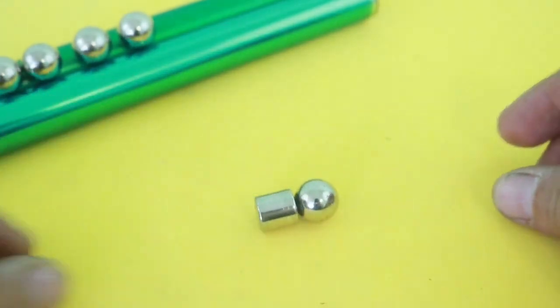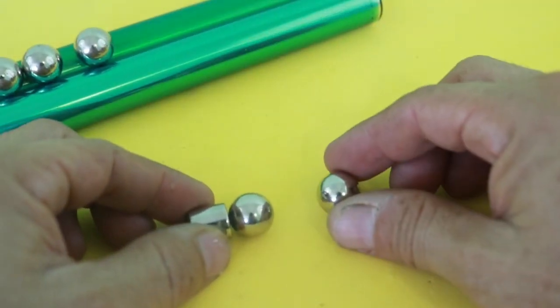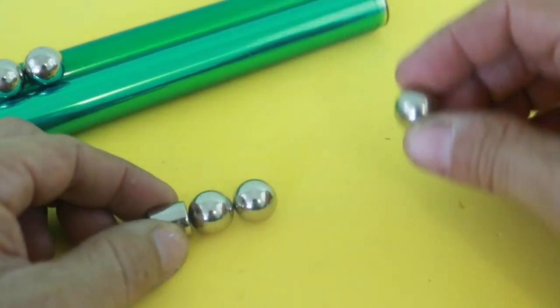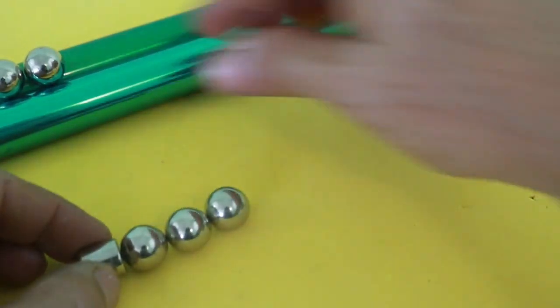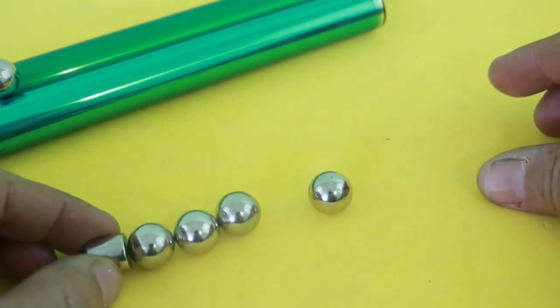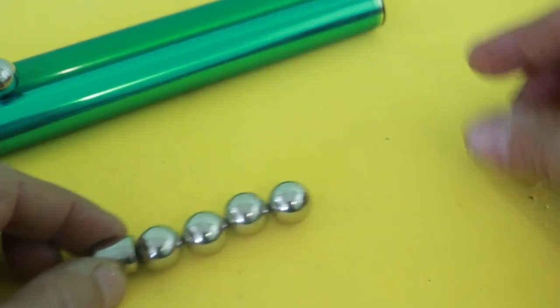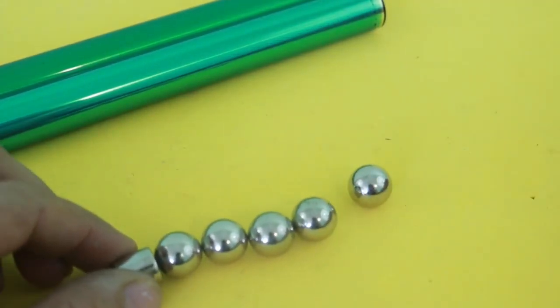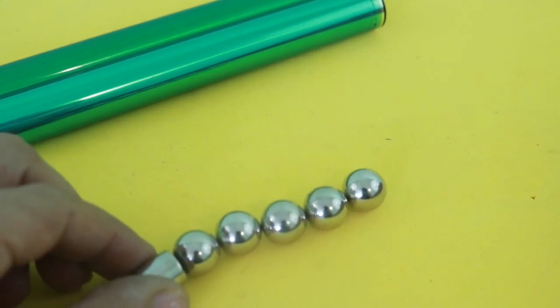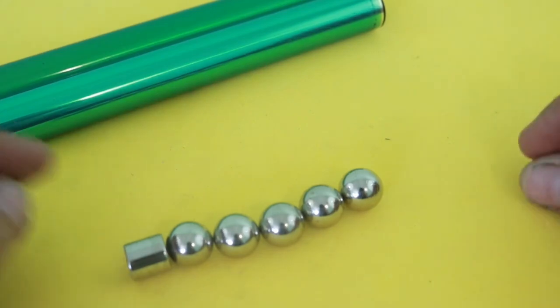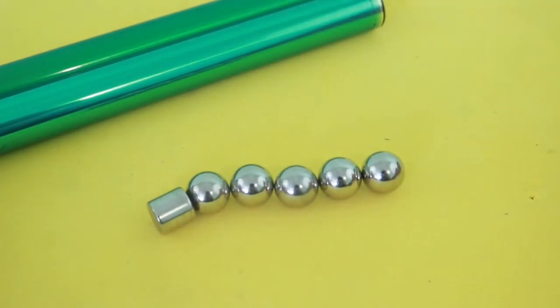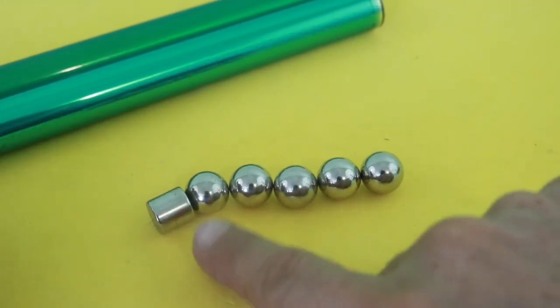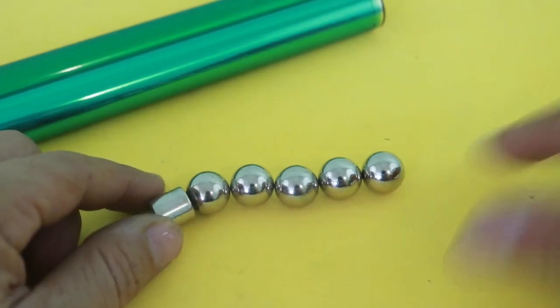And then we can take another ball and it will also be attracted but with less force than the first one. And then a third is attracted with even less force and so on. So if we continue, the force is less with each ball that we add until we do not have any more energy from the magnet. We have used all the energy in the magnet to convert it to kinetic energy.